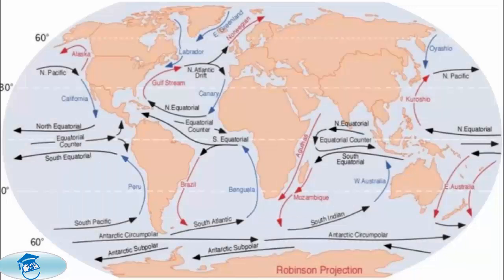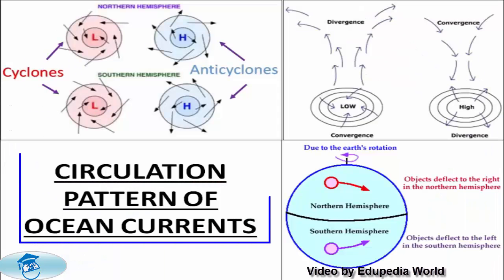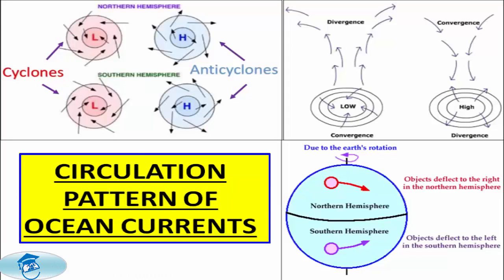Those were some of the main factors causing ocean currents. Moving on to the circulation pattern: ocean currents are greatly influenced by the stresses exerted by the prevailing winds and the Coriolis force, and the oceanic circulation pattern roughly corresponds to the Earth's atmospheric circulation pattern.